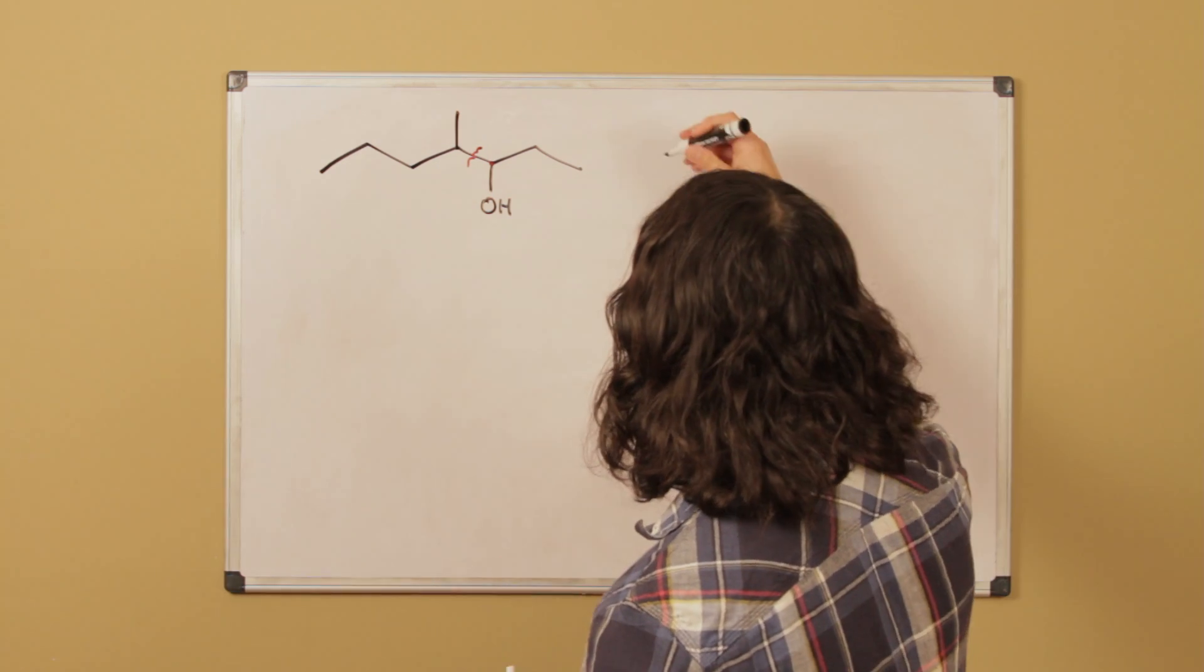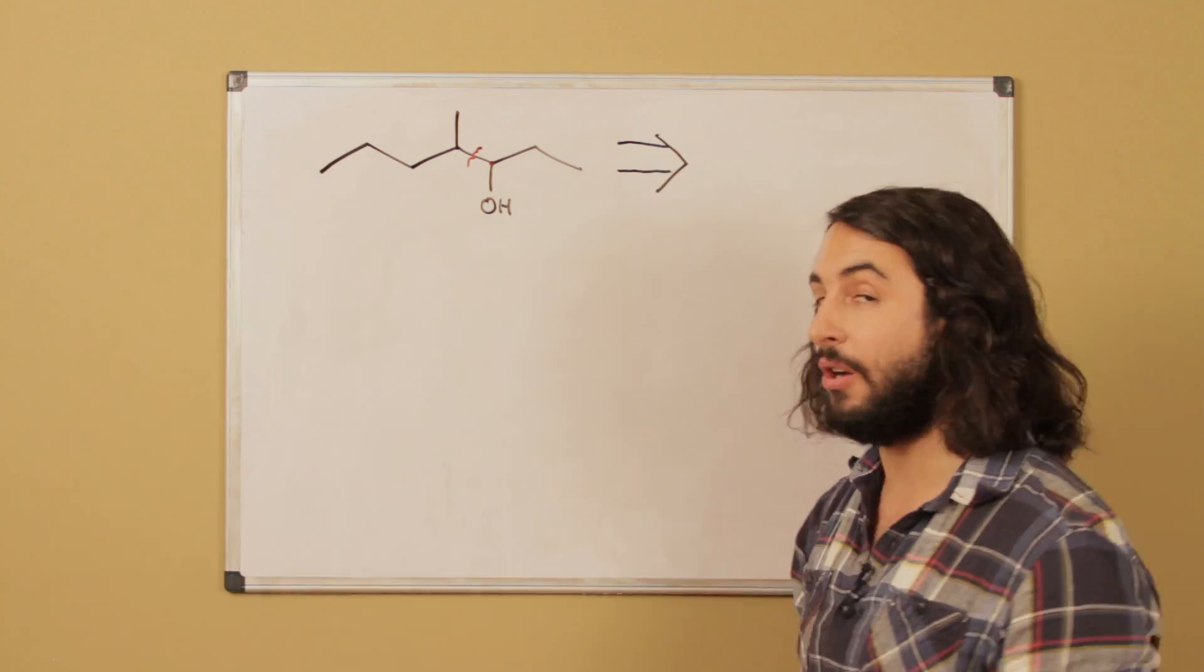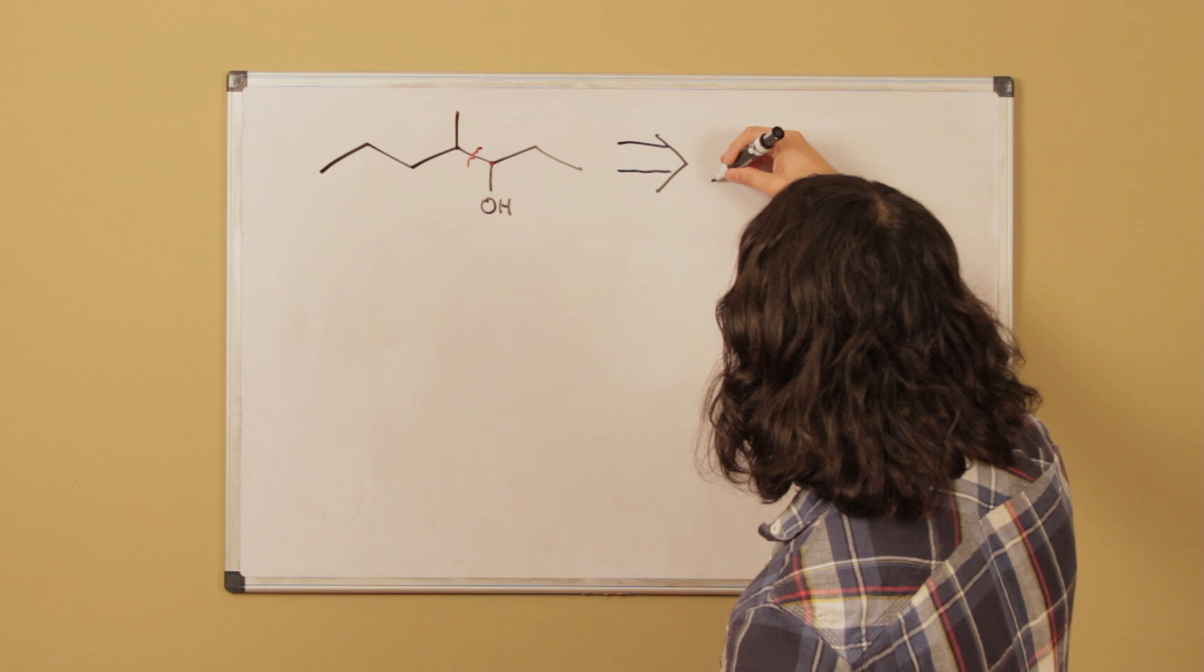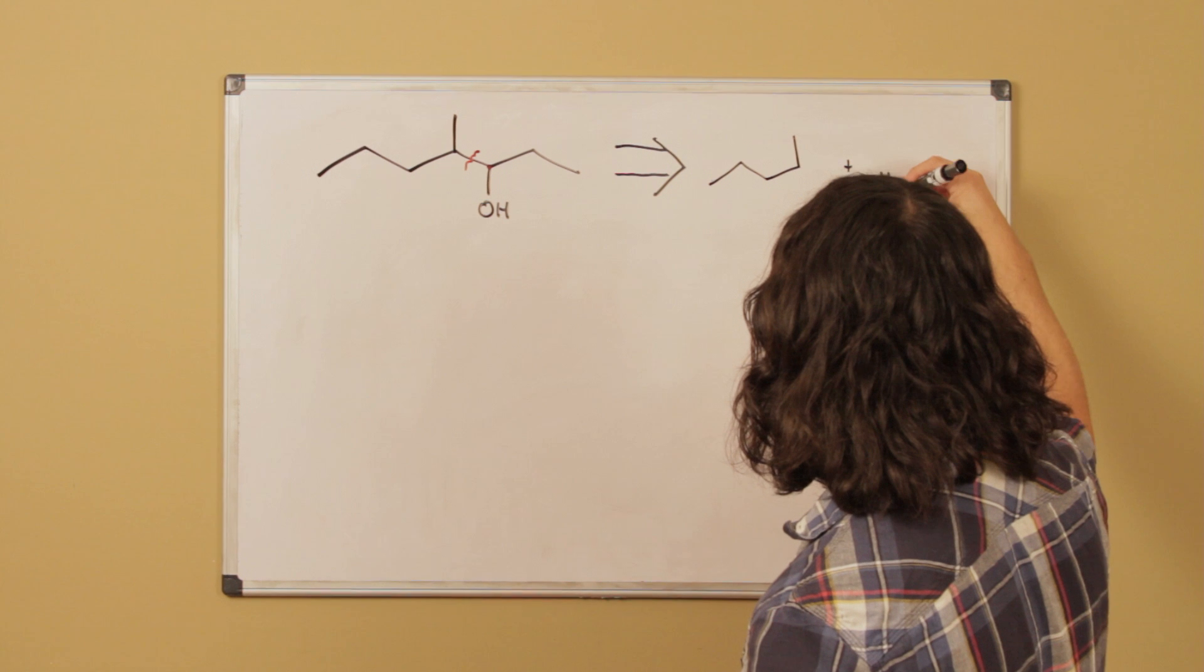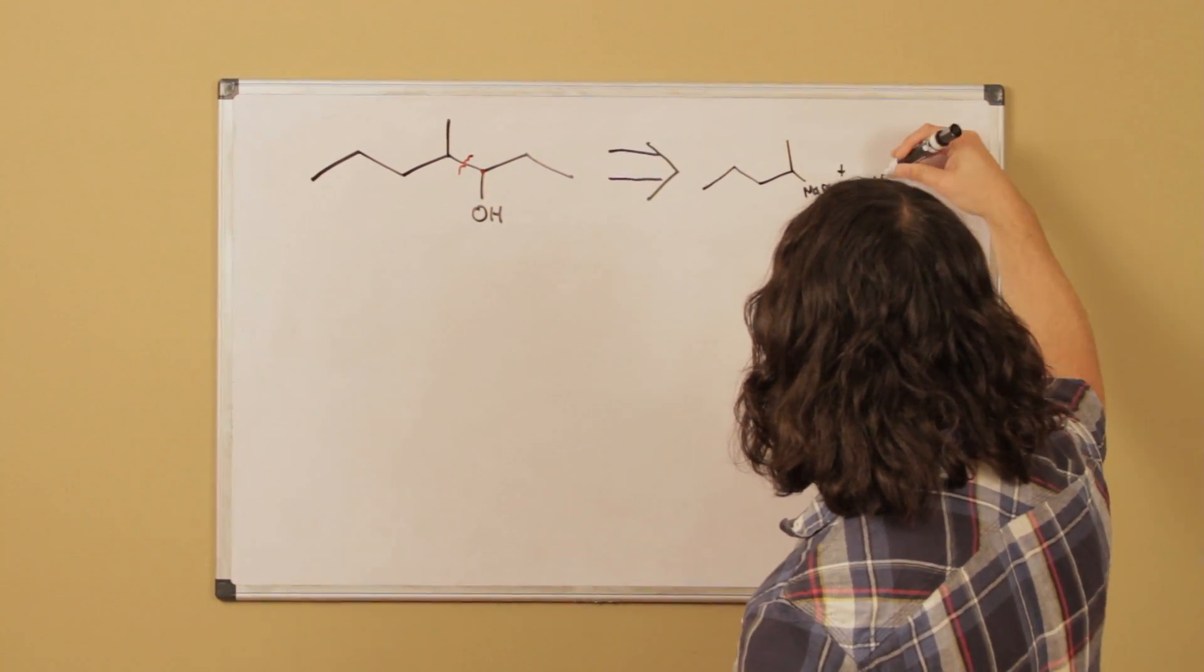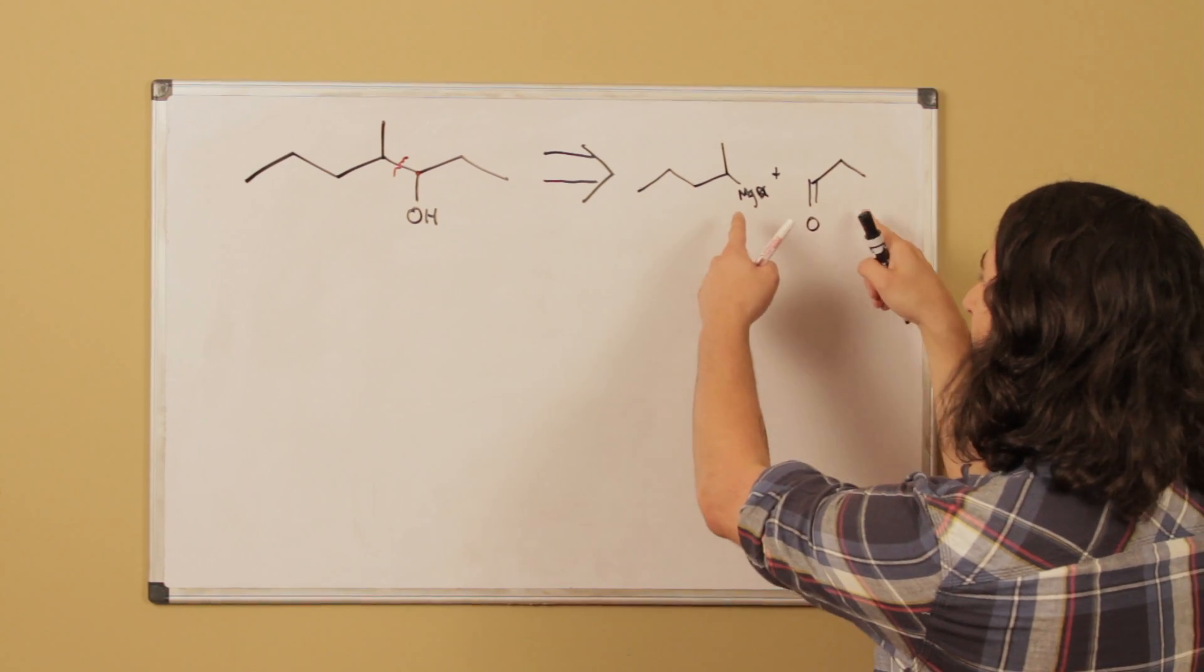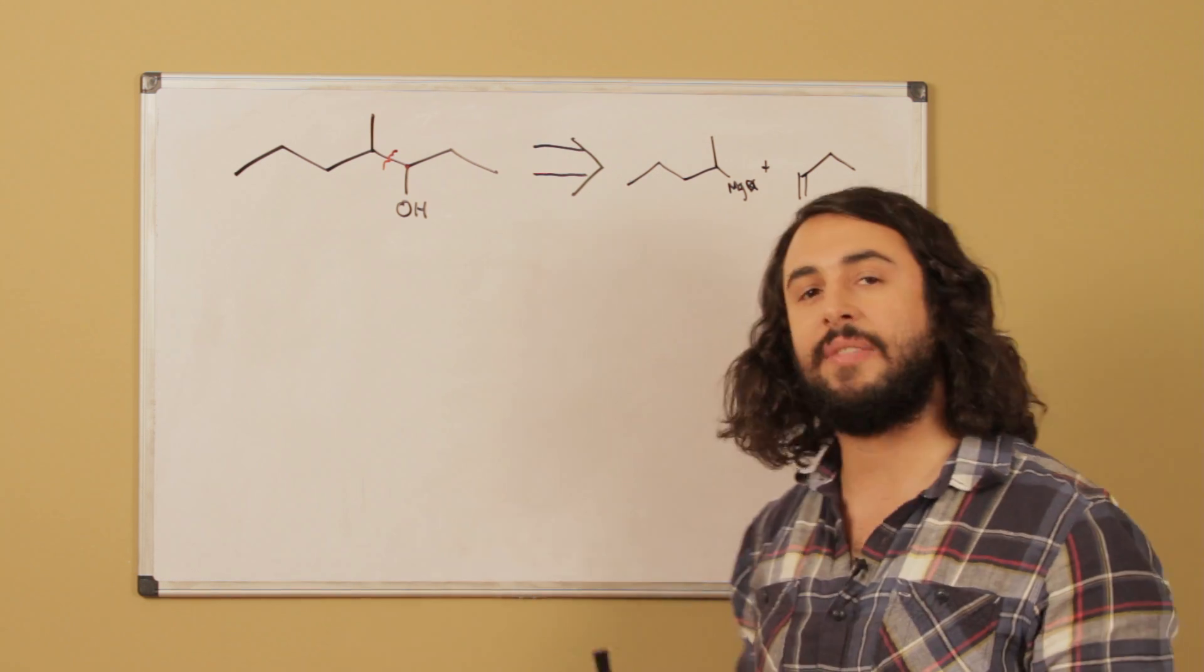And if we go retrosynthetically, remember that this kind of fat arrow is a retrosynthetic arrow. It does not mean a reaction, it means back in time. And so what can have come from this is that and the MgBr. So we have these two compounds and this is a valid retrosynthetic step because if we combine these compounds we will get that.